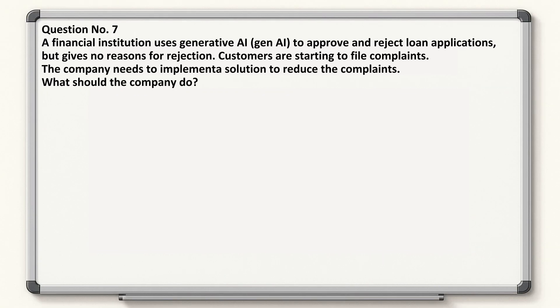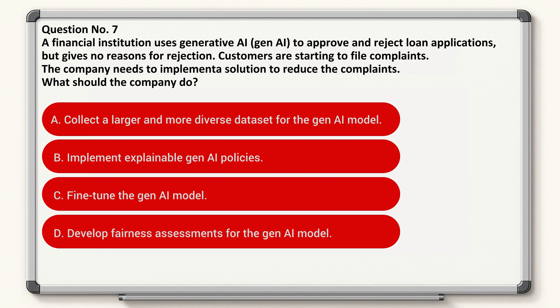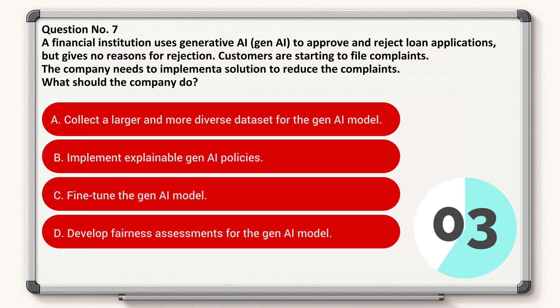Question number seven: a financial institution uses Generative AI to approve and reject loan applications, but gives no reasons for rejection. Customers are starting to file complaints. The company needs to implement a solution to reduce the complaints. What should the company do? Correct answer is B.